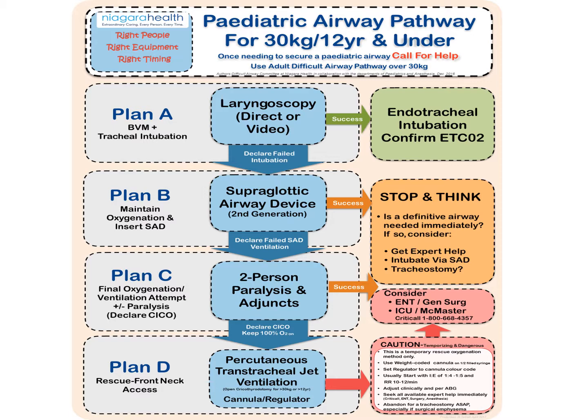We try to oxygenate through a supraglottic airway device. If successful, we stop and think about what type of immediate airway management is required — is it definitive, and what expert help can we use? Do we need to intubate through the supraglottic airway device or perform a tracheostomy? If we fail to oxygenate with a supraglottic airway device, we go to Plan C, which is our last attempt at oxygenating the patient, giving paralysis if not already done, and preparing for front of neck access and Plan D. The key difference between adults and pediatrics is that Plan D for rescue front of neck access involves jet ventilation as the primary approach, as opposed to the scalpel-bougie-tube technique used for adults.